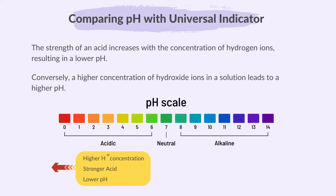Conversely, a higher concentration of hydroxide ions in a solution leads to a higher pH. So the higher the hydroxide concentration, the stronger the alkali and the higher the pH.